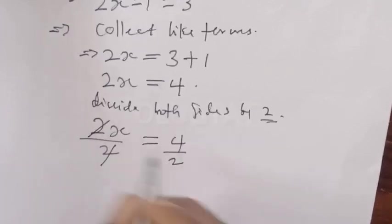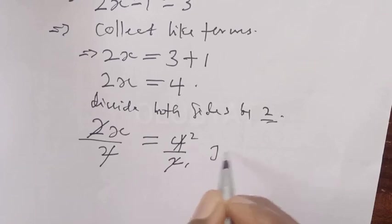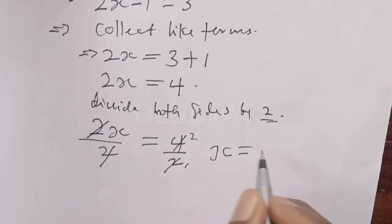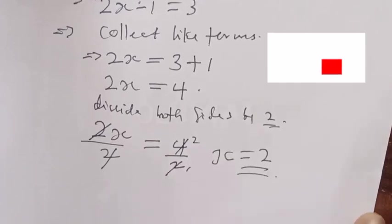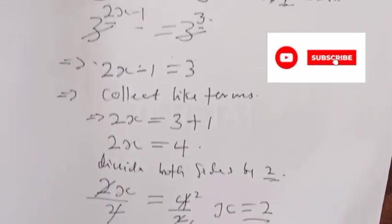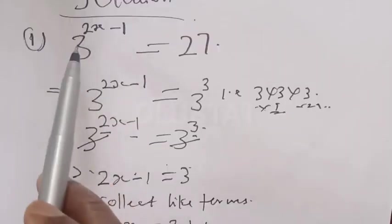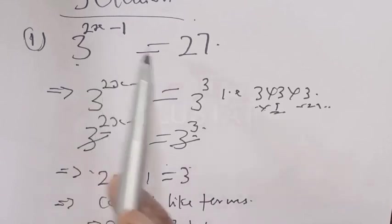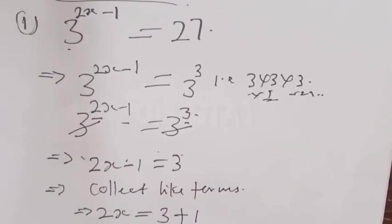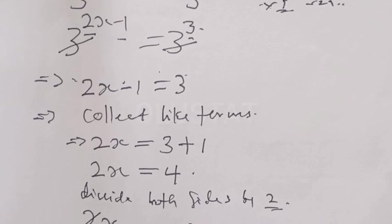Solving gives us x is equal to 2. That is the answer. You can see that it is very simple — that is a simple way to solve this exponential equation: 3 raised to power 2x minus 1 is equal to 27. Now let's check if our answer is correct. We said x is equal to 2.